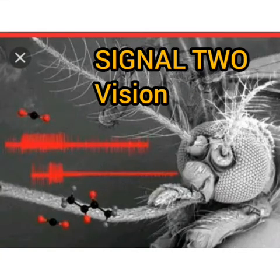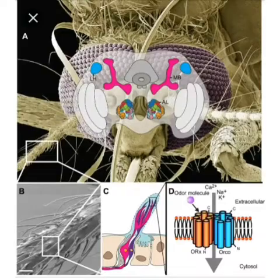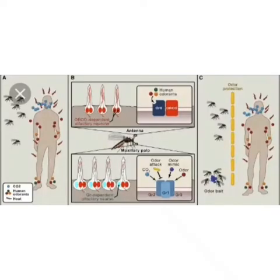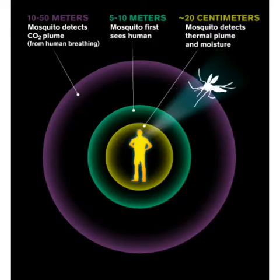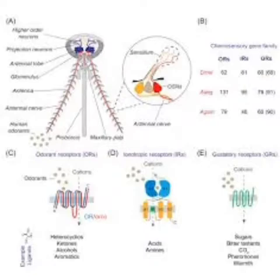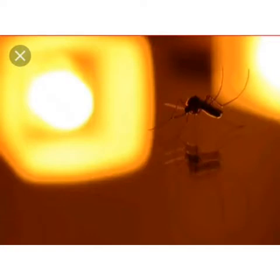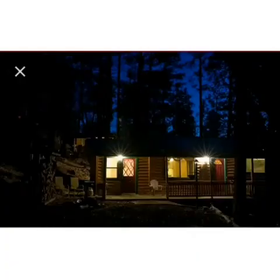Signal 2: Vision. Mosquitoes also use sight to detect a suitable host. Experiments show that after a human being's CO2 emission attracts a mosquito, that mosquito will begin to see the human being once it is within the range of 5 to 10 meters. Mosquitoes have sharp eyes and good sight receptors, so darkness is not really an issue for mosquitoes to locate you with their eyes at night.